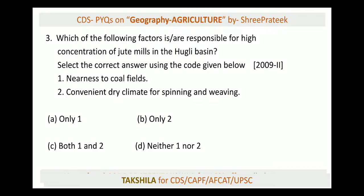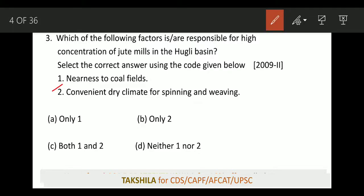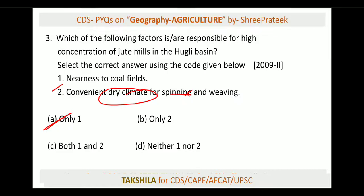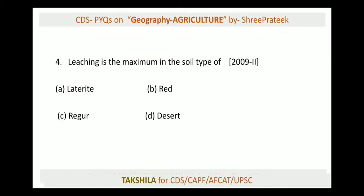Next: what are the factors responsible for high concentration of jute mills in the Hooghly basin? Remember, jute is called the golden fiber. Jute grows towards West Bengal and Assam because humidity is high there. The Hooghly, which is a distributary of the Ganga, is near Kolkata where these mills are located. The responsible factors include nearness to coalfields — dry climate is wrong because jute needs high humidity. So options requiring dry climate are incorrect; nearness to coalfields is the right answer.